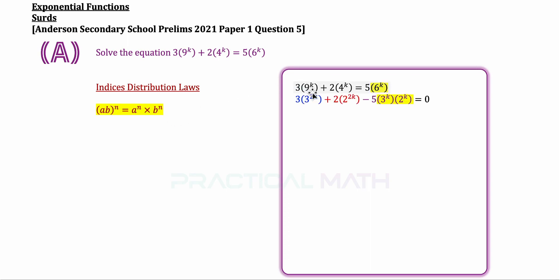So 9 is the same as 3 squared. 4 to the power of k is the same as 2 to the power of 2k, and shifting this from the right to the left becomes a negative. 6 to the power of k, using this law, can now be written as 3 to the power of k times 2 to the power of k. So we have changed or linked up all the bases.